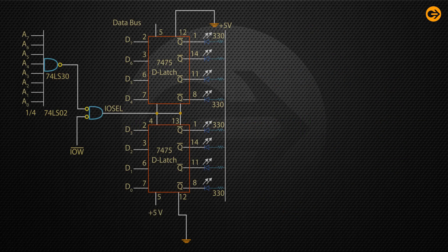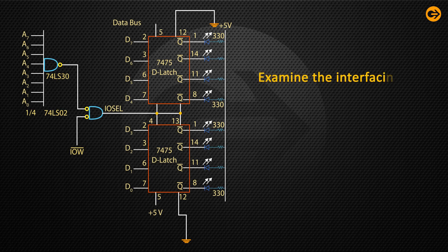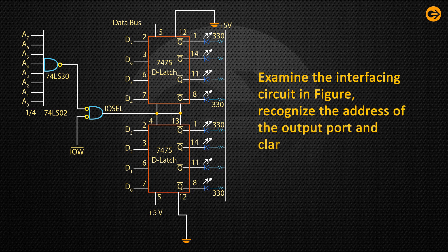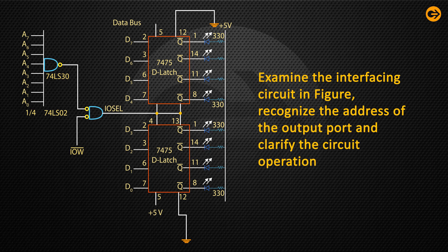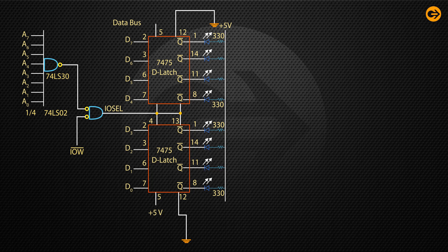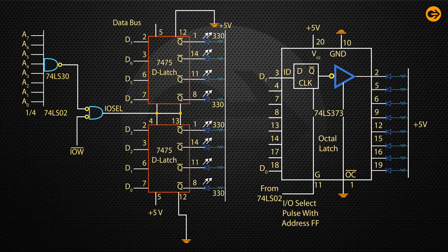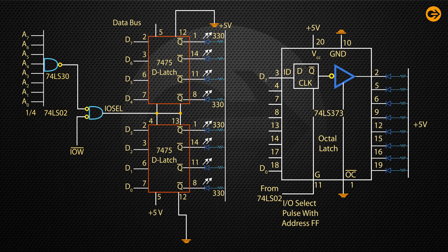LED display for binary data. Problem statement: Examine the interfacing circuit in figure. Recognize the address of the output port and clarify the circuit operation. Clarify connections among these two figures. Write instruction to show binary data at the port.